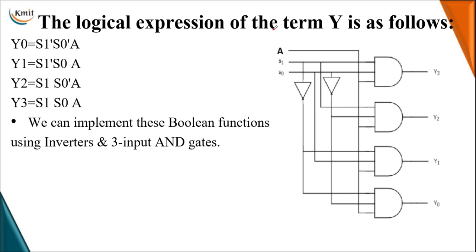The logical expression for each output terminal is a product term. Hence, we use an array of AND gates, each giving one output terminal, where the data input A is connected as one input to every AND gate. Out of all four AND gates, A is connected as one of the inputs, and based on the connected selection lines, the data input is transferred to that particular output terminal.